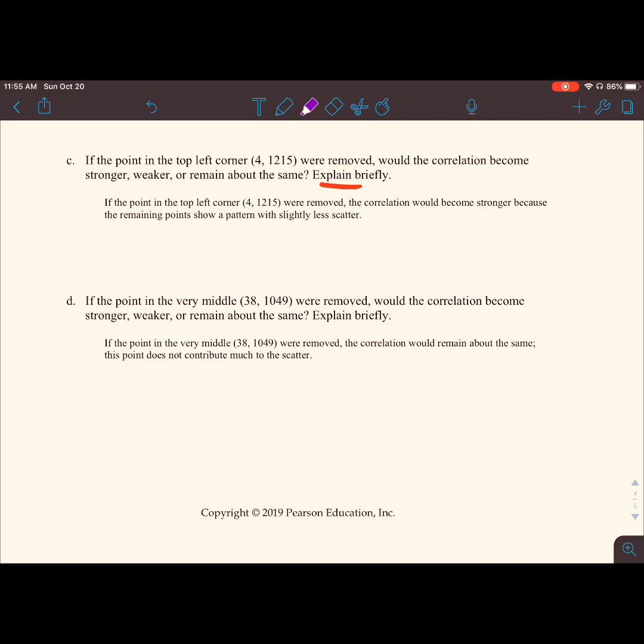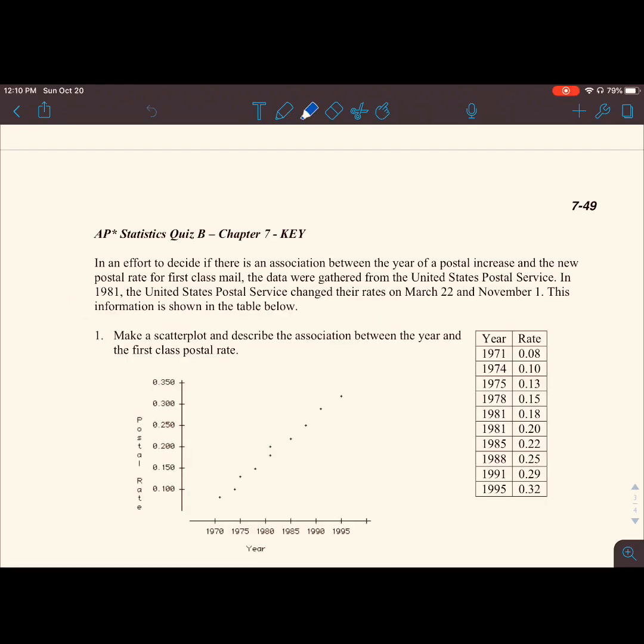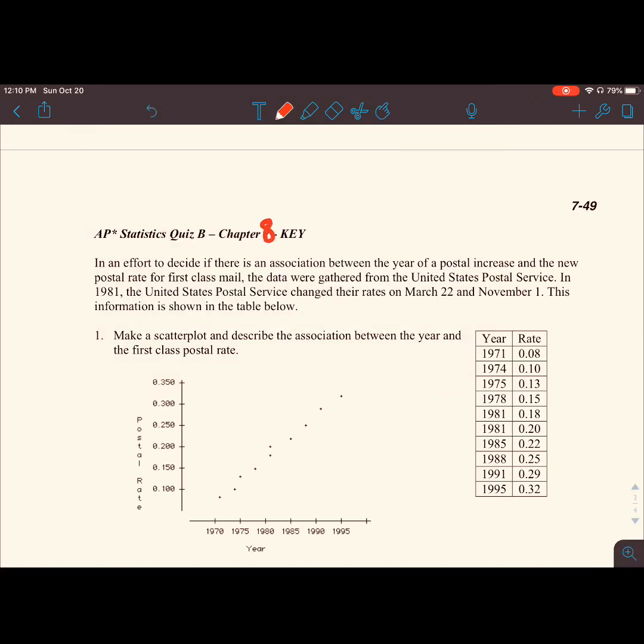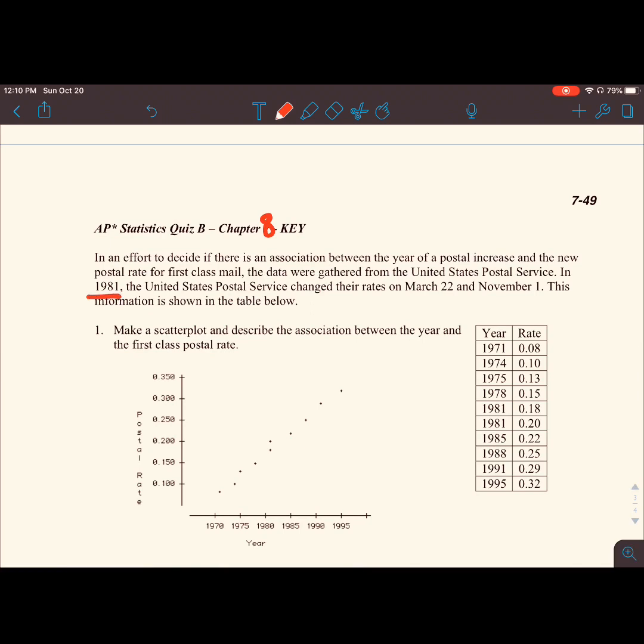Now we will move on to Chapter 8. In an effort to decide if there is an association between the year of a postal increase and a new postal rate for first-class mail, the data were gathered from the United States Postal Service. In 1981, the United States Postal Service changed their rates on March 22nd and November 1st. This information is shown in the table below.